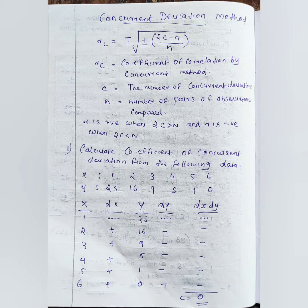Rc is the coefficient of correlation by the concurrent deviation method. The Pearson correlation coefficient is denoted by the small letter r. Spearman's rank correlation is denoted by the capital letter R. Concurrent deviation method uses Rc. C is the number of concurrent deviations.